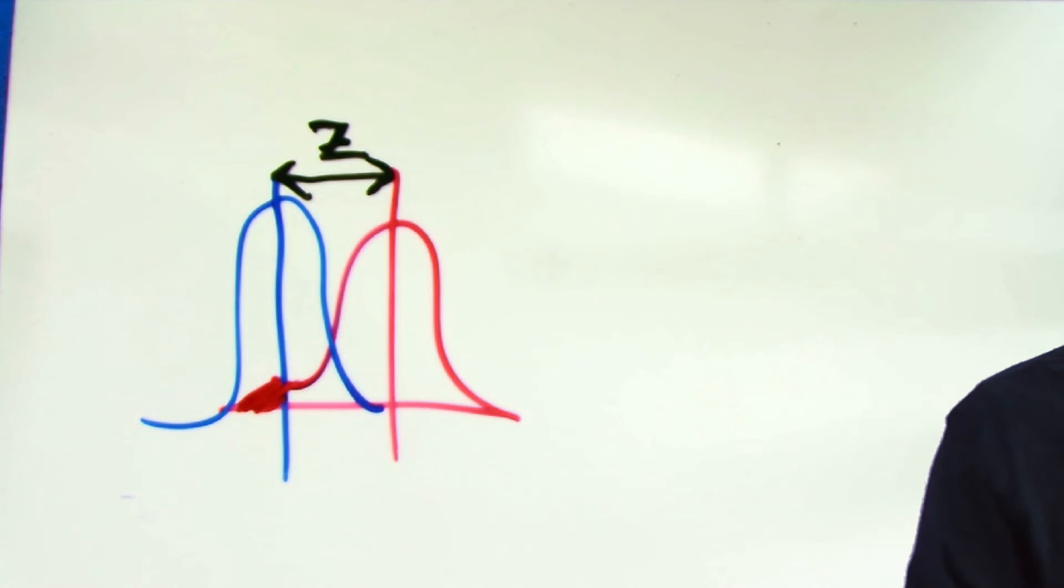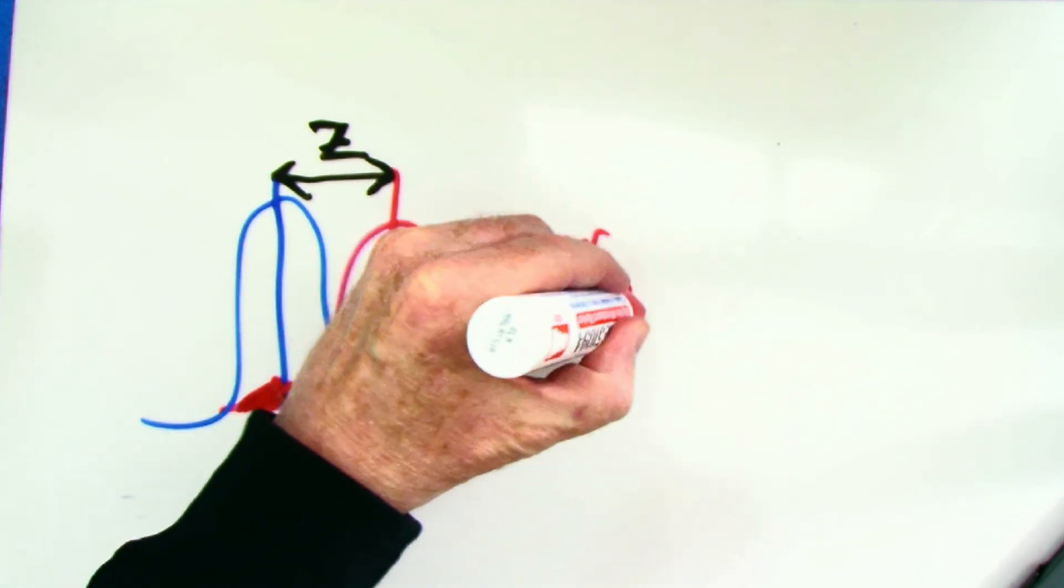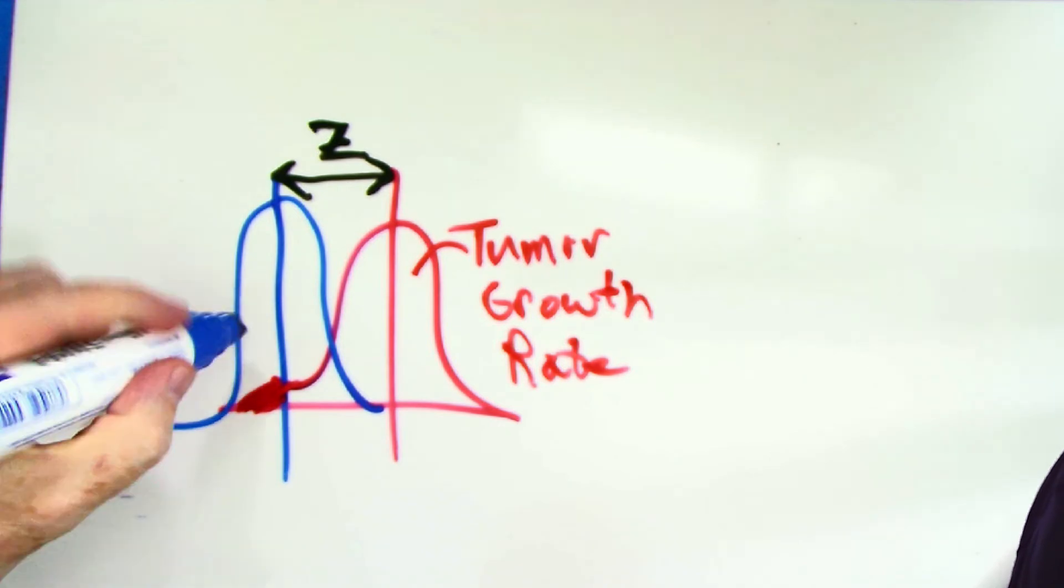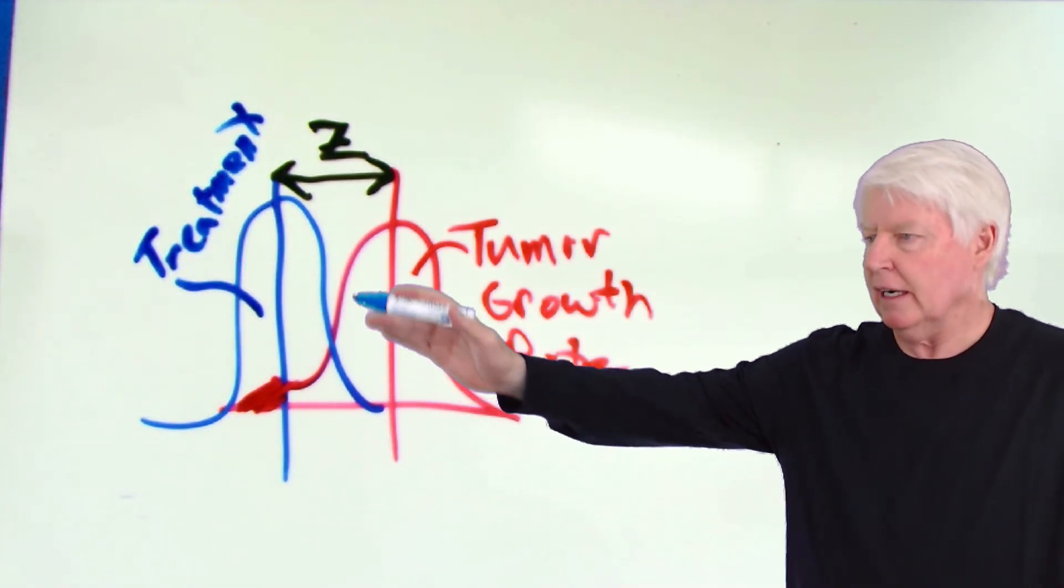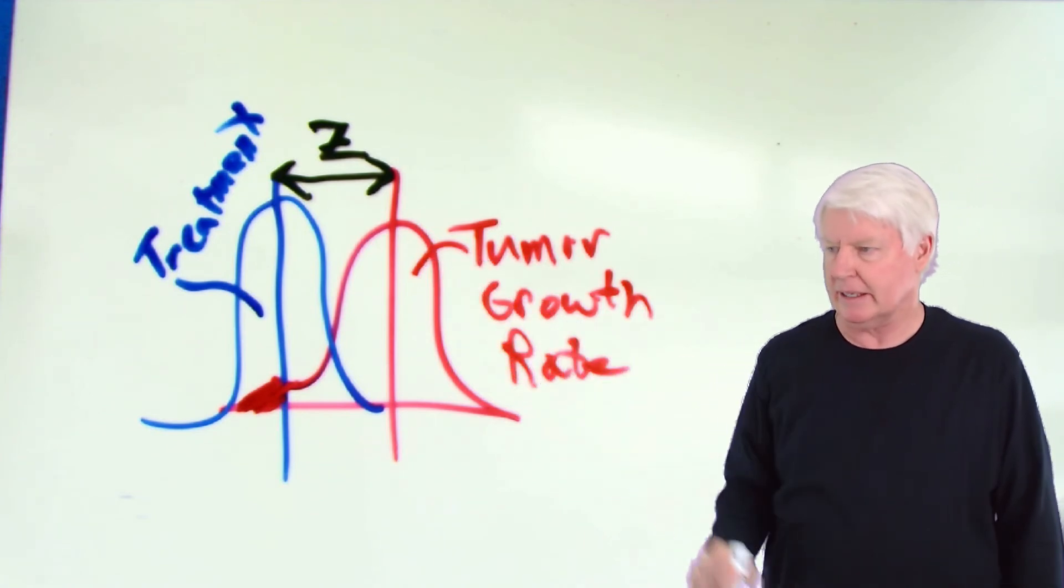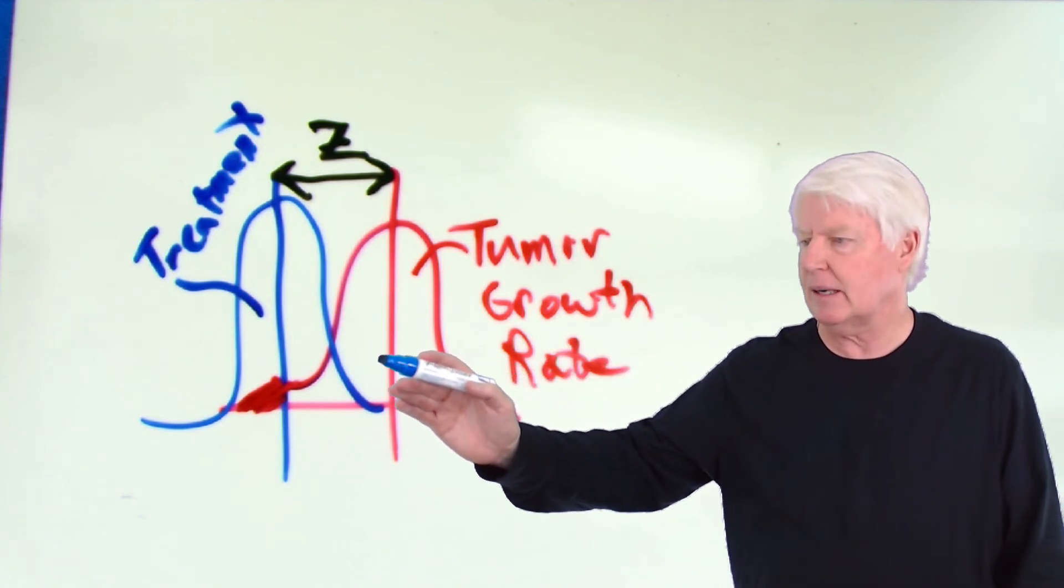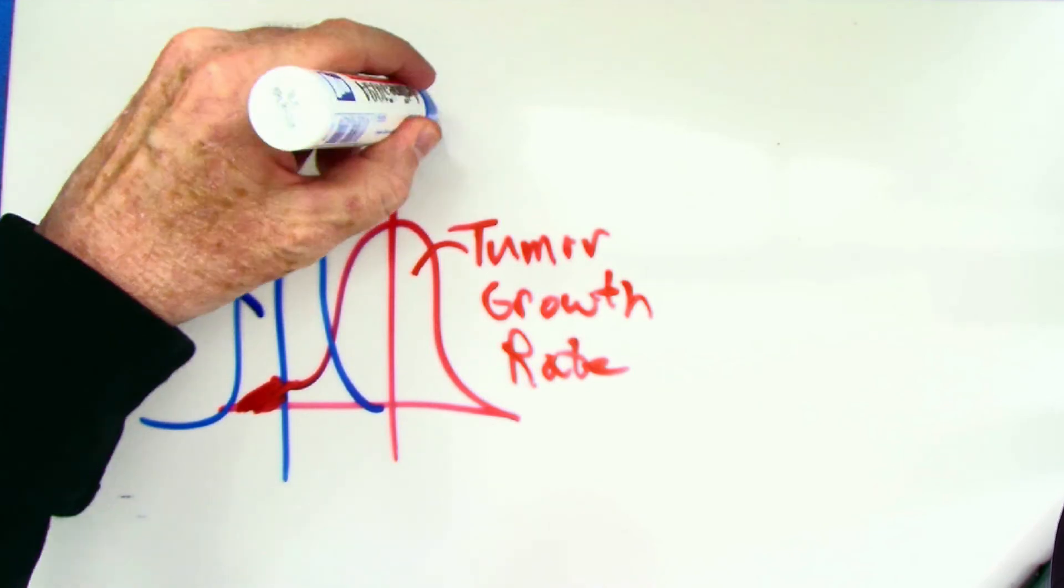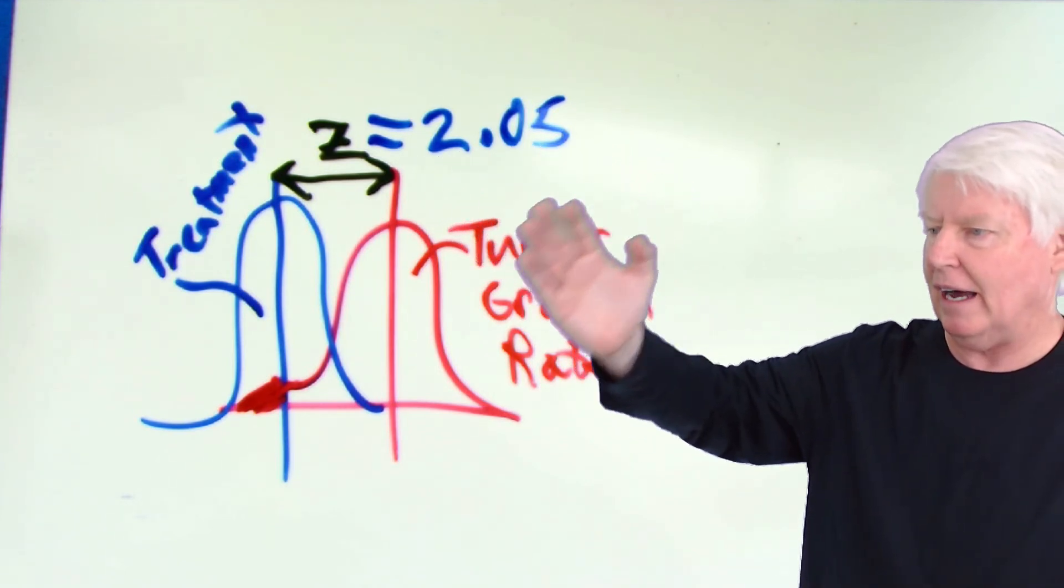And the reason we do this is we're trying to answer the question, did something change? So let's say in this example, this one is tumor growth rate. We're trying to solve cancer. Tumor growth rate. And this is with no treatment. This is the variation in tumor growth rate. But then we have a treatment, and we apply the treatment to the tumor. And it shifts the distribution over, and it looks like we slow the growth rate of the tumor with the treatment. But I want to know if that's real or if it's just random numerical differences. And the way you do that is you calculate the number of sigmas between there. In other words, the Z statistic. Then let's say the Z statistic equaled, I don't know, 2.05.